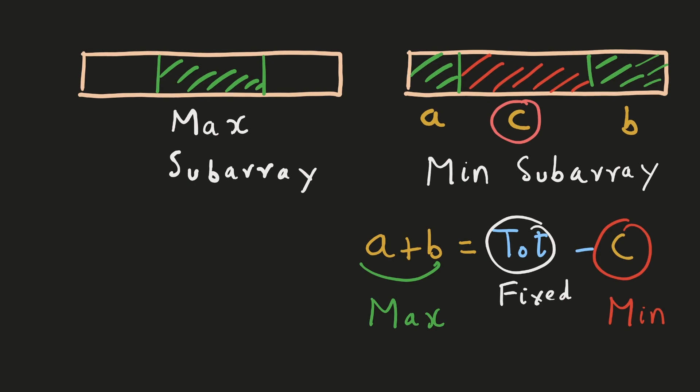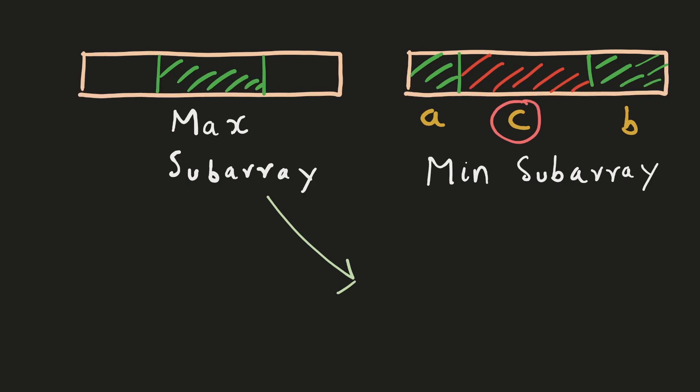The solution will be very similar to finding the maximum subarray. So our answer can either be the maximum subarray from the middle part or the answer can be derived by subtracting the minimum subarray from the total of this array. And whichever is the maximum of these two will be the answer.